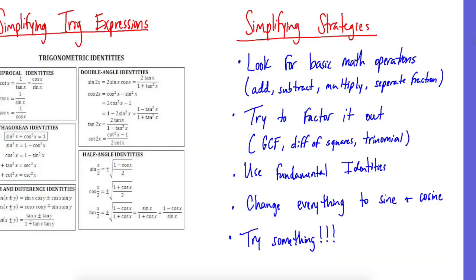This was one of the hardest ones, simplifying trig expressions. Here's some basic operations to look for: adding, subtracting, multiplying, separating fractions. Always try to factor, start with the GCF, look for difference of squares or trinomial. Use your fundamental identities, which is the reciprocal identities and Pythagorean. Those are our fundamental ones. Try to change everything in terms of sine and cosine. And if all else fails, you just got to try something.